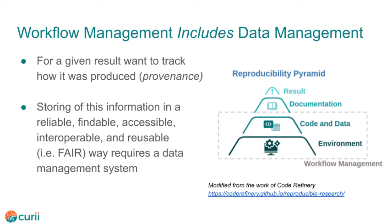Scientific workflows are important for reproducibility because they encode all of the steps, inputs, and outputs that make up a data analysis. A workflow management system executes a workflow for particular input data in order to produce a result. Reproducibility requires, for a given result, that we know how it was produced — this is called provenance. The more detail the better. This means precisely identifying the input datasets, workflow steps, software versions, hardware resources, and other details that will enable someone to later recreate a compatible environment that will produce the same results given the same initial inputs. We could try to record all of this by hand, but computers are good at remembering things, and workflow management systems already know all these things. On the other hand, data and code can change over time, so simply recording file names and paths isn't good enough — we need data management.